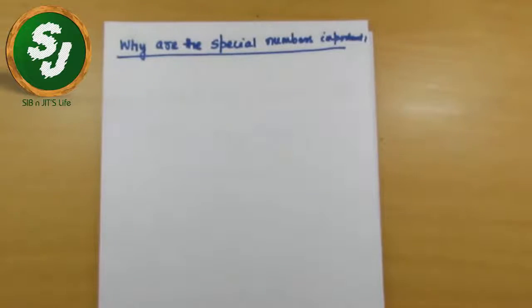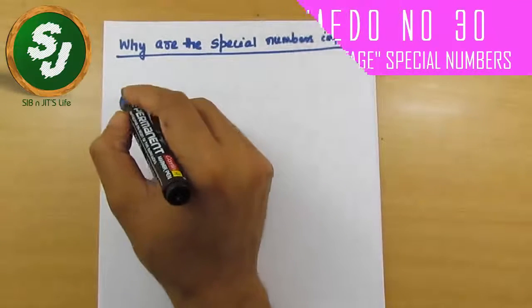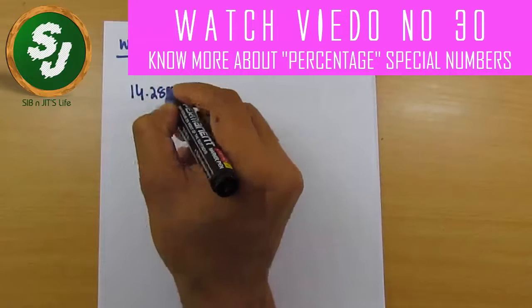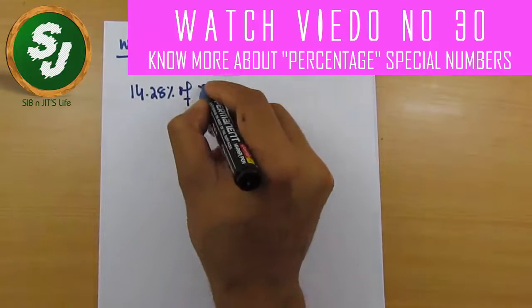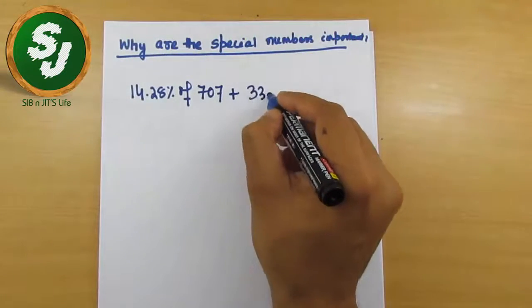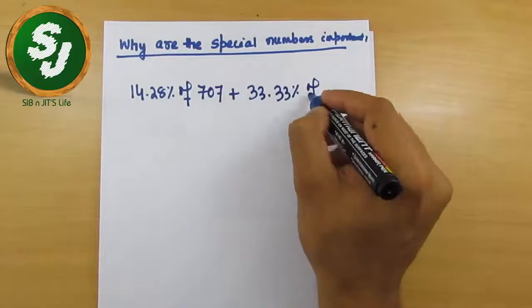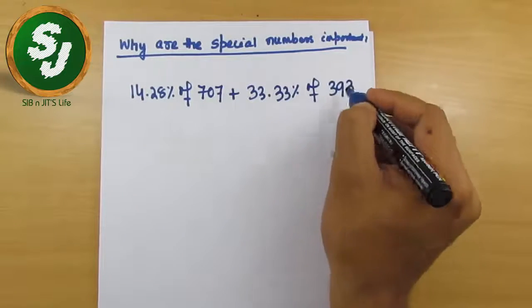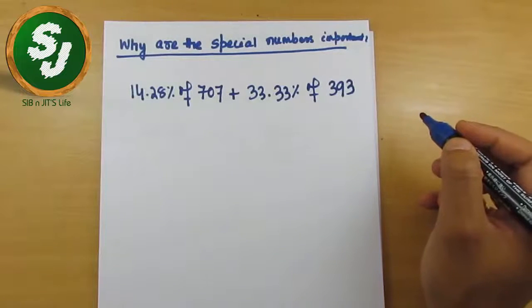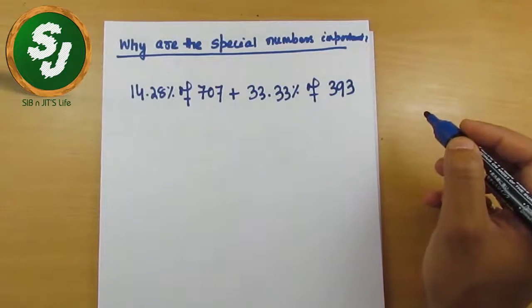Let me explain how these numbers play a crucial role. The equation can be set like this: 14.28% of 707 plus 33.33% of 393. In this kind of question, if you don't remember the spatial numbers, how will you approach?